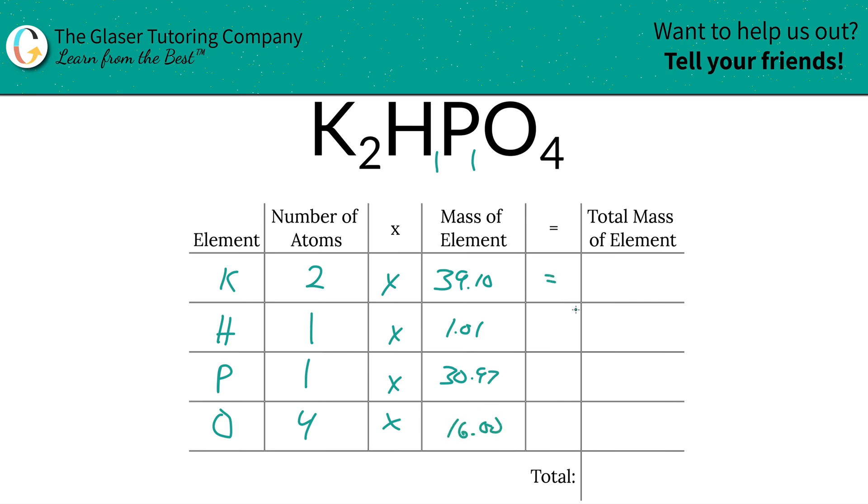So then we're going to find the total mass of each element in the compound by simply multiplying this row across. The total mass of potassium here is 78.20, total mass of hydrogen is 1.01, phosphorus is 30.97, and then oxygen you're going to take 4 and multiply it by the 16, so that works out to be 64.